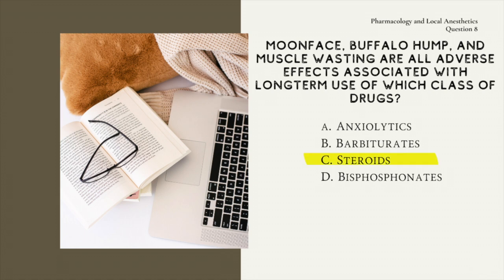The answer is C: Steroids. Long-term steroid use can precipitate Cushing's disease-like symptoms, which is the overproduction of steroids, and includes moon face, weight gain, buffalo hump, delayed wound healing, muscle wasting, and more. The other drugs listed in this question do have long-term effects, but they are unlike those associated with steroid use.